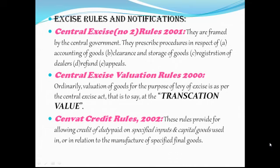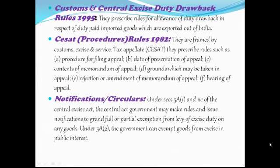The next one is the CENVAT Credit Rules, 2002. These rules provide for allowing credit of duty paid on specified inputs and capital goods used in and in relation to the manufacture of specified final goods. The next one is the Customs and Central Excise Duty Drawback Rules, 1995. They prescribe rules for allowance of duty drawback in respect of duty-paid imported goods which were exported out of India. The next one is the CESTAT Procedure Rules, 1982, framed by Customs, Excise and Service Tax Appellate Tribunal. They prescribe rules such as: procedure for filing an appeal, date of presentation of appeal, contents of memorandum of appeal, grounds which may be taken in appeal, rejection or amendment of memorandum of appeal, and hearing of appeal.